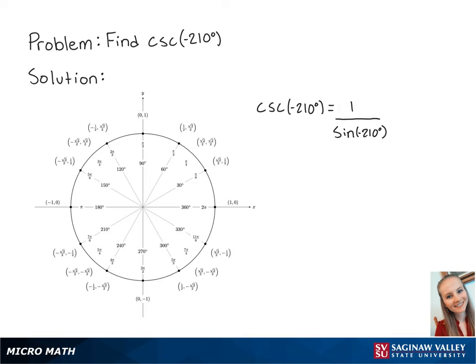Looking at the unit circle, if we want to find negative 210 degrees, we're going to start at 0 and rotate backward 210 degrees. Sine correlates to the y-coordinate on the unit circle. So cosecant of negative 210 degrees is equal to 1 over 1 half, which is equal to 2. And this is the final answer.